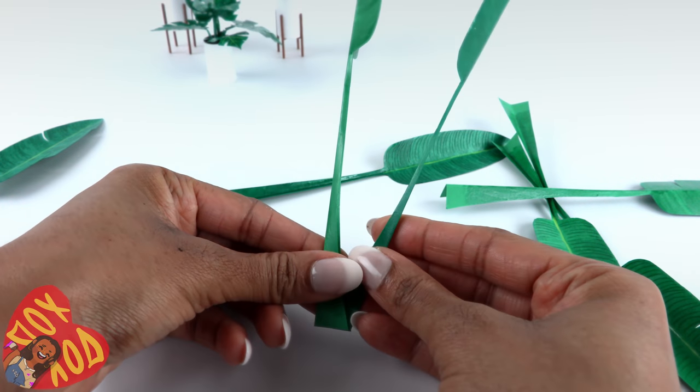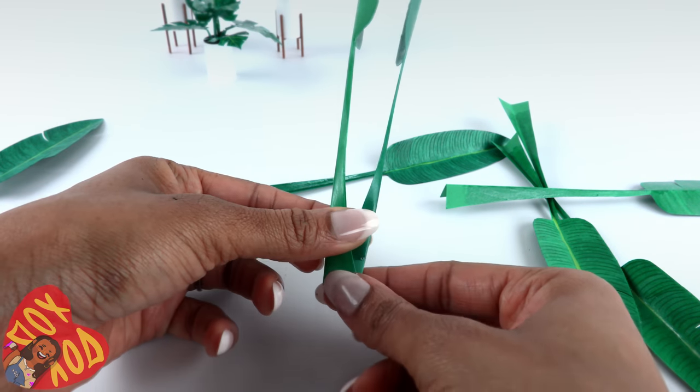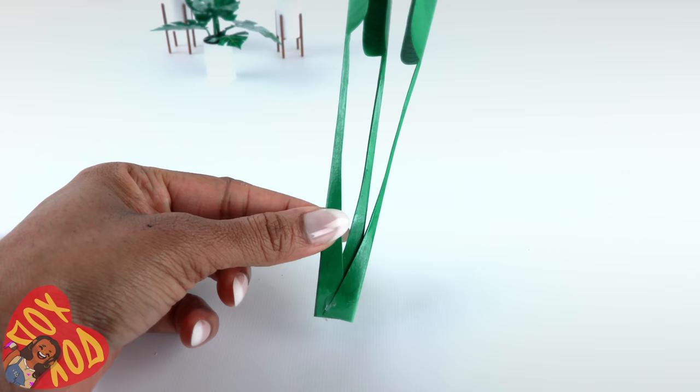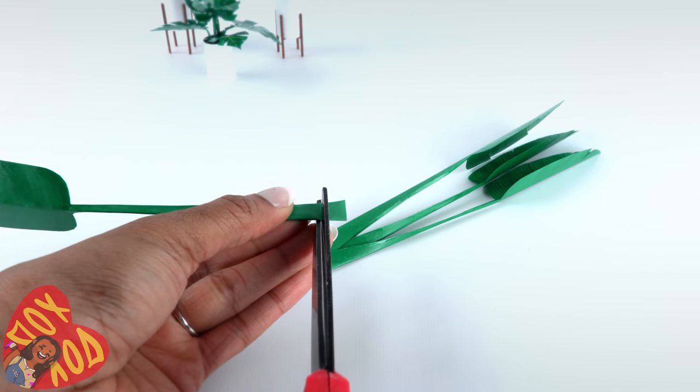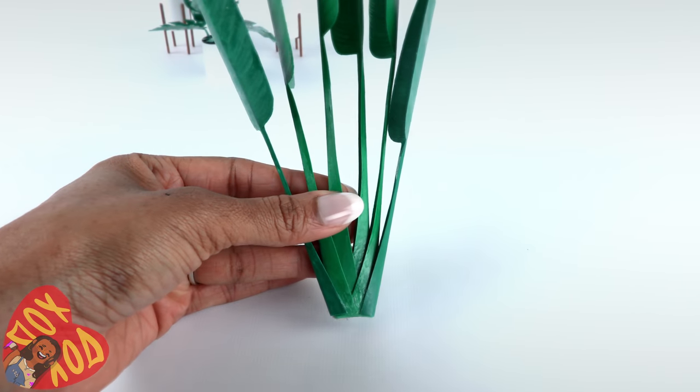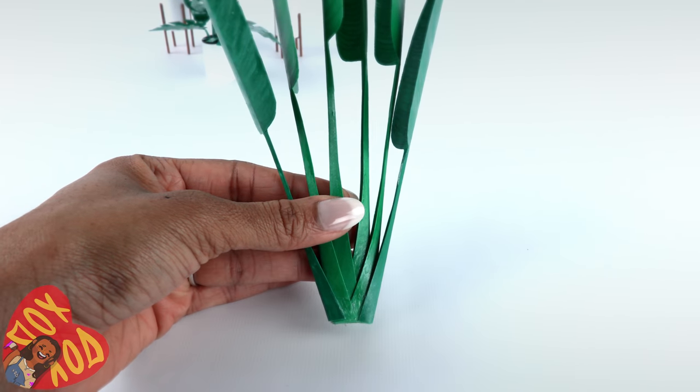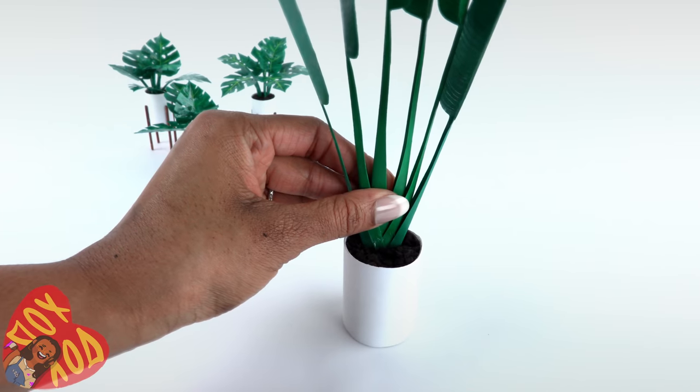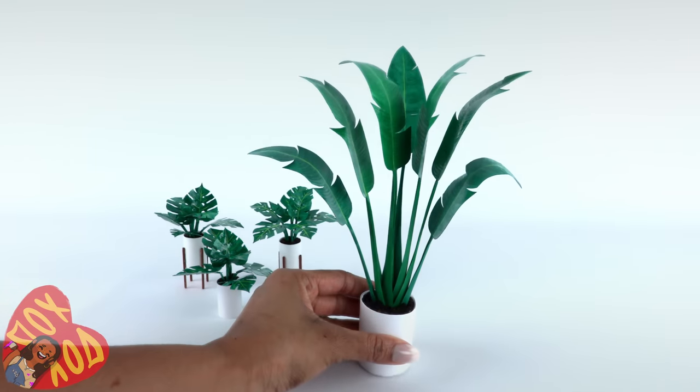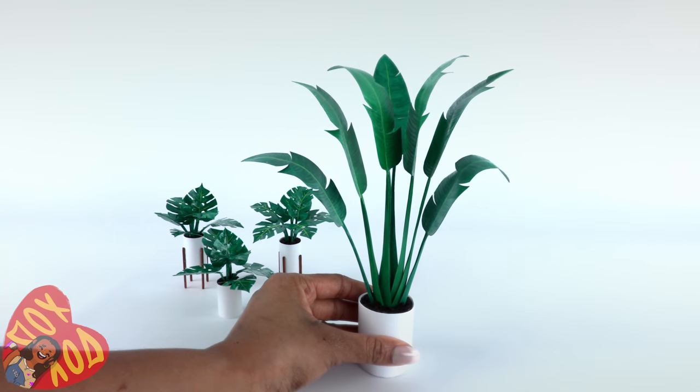At the bottom, begin nesting them inside of one another. I used a little hot glue to hold them in place. After gluing together three, I began trimming them to vary the heights. We have a nice little pattern going on right there. Glue it into a paper pot. Bend the leaves just a little to make a bird-of-paradise plant.